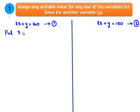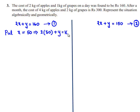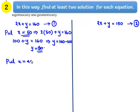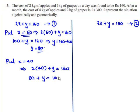Put x = 50: 2 times 50 plus y = 160, which gives 100 + y = 160, so y = 60. If x = 50, then y = 60. Now put x = 40: 2 times 40 plus y = 160, so 80 + y = 160, giving y = 80. Therefore, if x = 40, the value of y is 80.